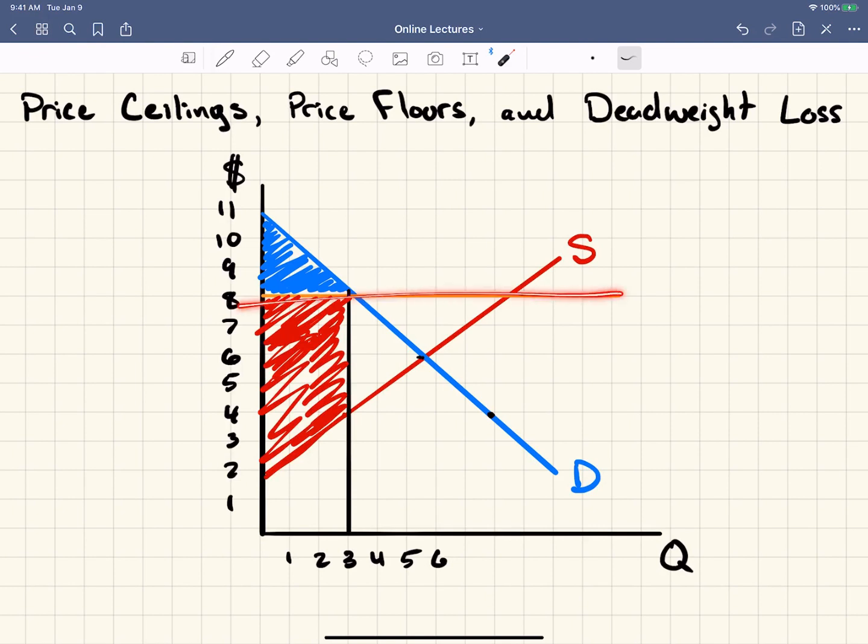Because if you didn't have this price floor, this person right here would have been more than happy to buy a product from this person right here. And these two people would have both been happy because they could have sold at say this price. And there would have been some consumer surplus here, and some producer surplus here. But none of this transaction can happen. In fact, none of the transactions in that triangle can happen.